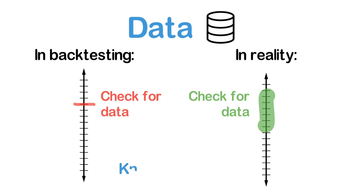You can also use QuantConnect's data feed as the input for live trading. Alternatively, you can also use the data feed of one of the supported brokers like Interactive Brokers. Just note that to get access to real-time data through IB, you will need to subscribe to one of their data feeds. Depending on where you get your data from, make sure to have a deep understanding of the data format, the related time zone, and how and when your algorithm will receive this data.